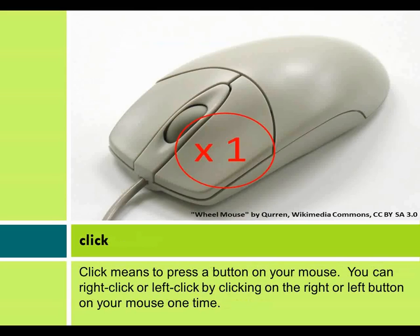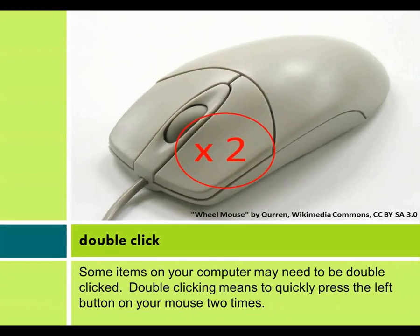Click. Click means to press a button on your mouse. You can right click or left click by clicking on the right or left button on your mouse one time. Double click. Some items on your computer may need to be double clicked. Double clicking means to quickly press the left button on your mouse two times.